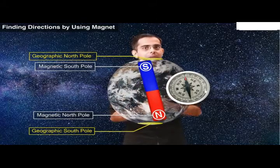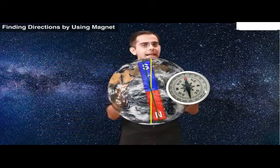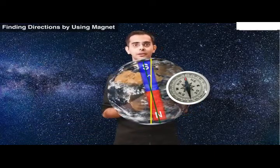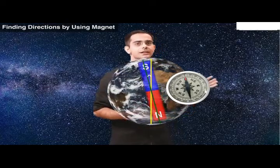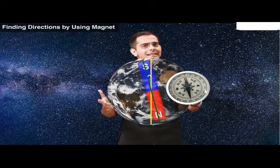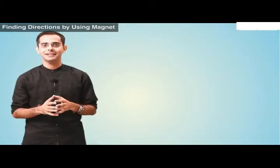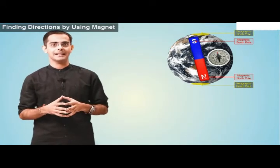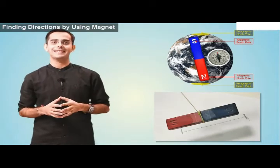Keep in mind that the geographical north pole and the magnetic south pole are not exactly at the same position. The magnetic poles of the earth keep on changing because of changes that take place in the earth's core — and you will study those changes in your higher classes. By now you should be clear that the earth, being a huge magnet, forces the magnetic compass or the suspended magnet to align in the north-south direction.